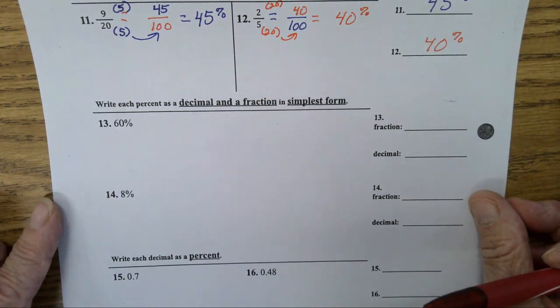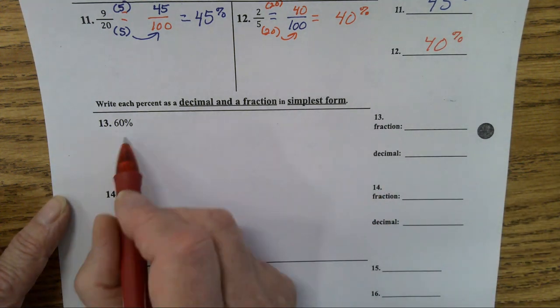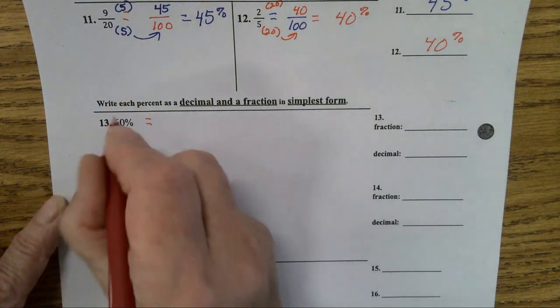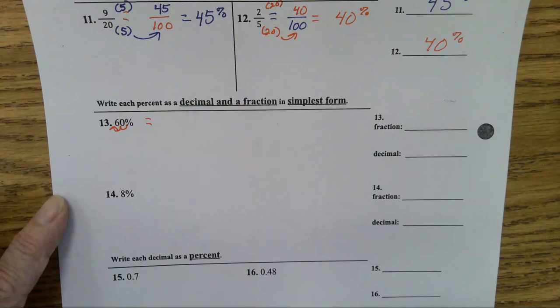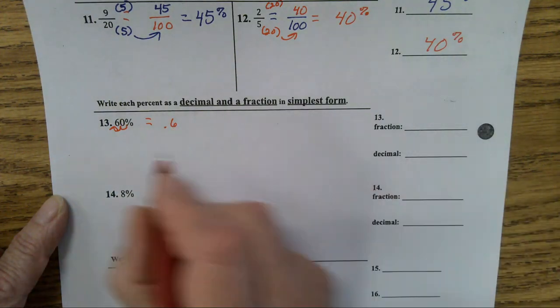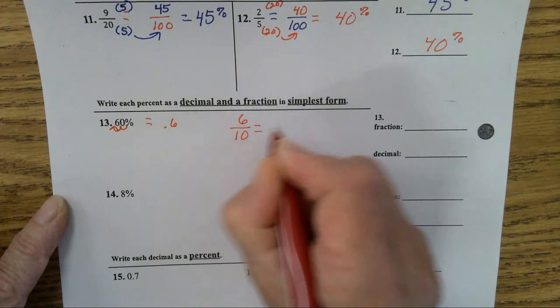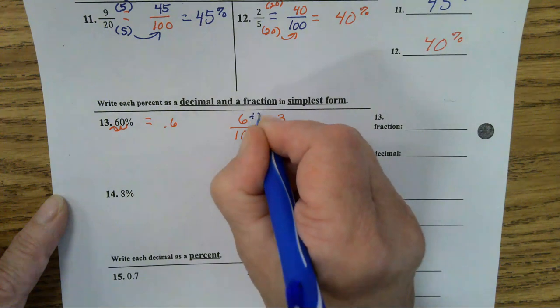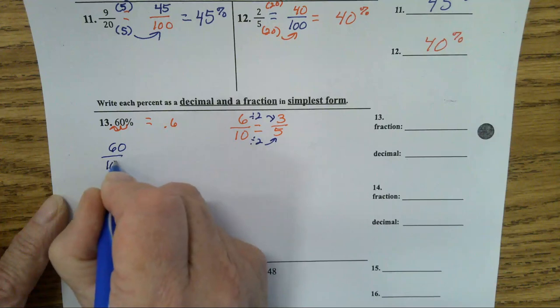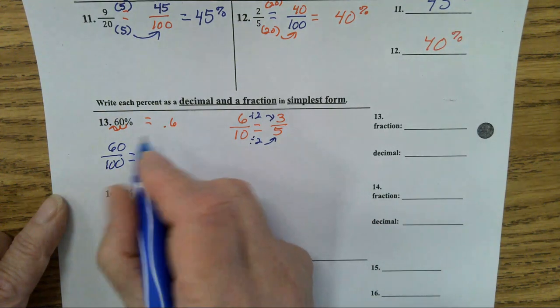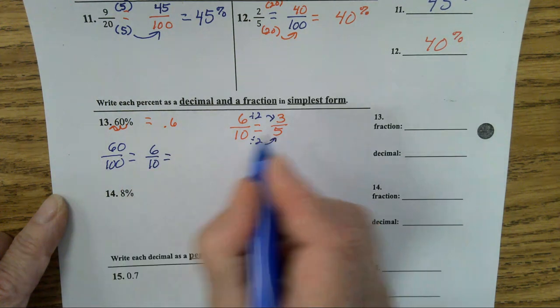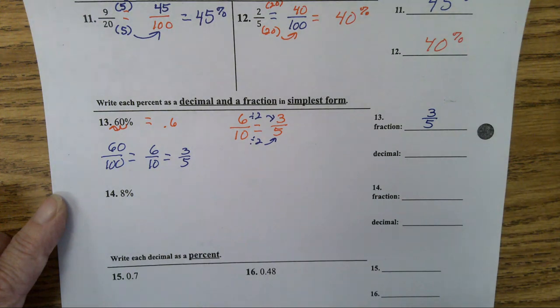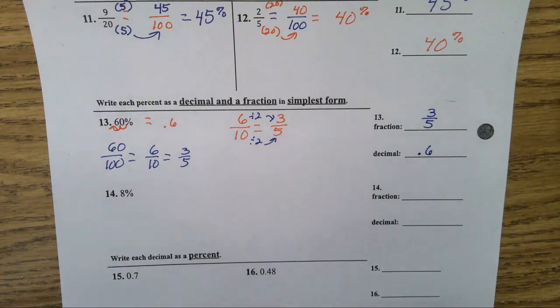Write each percent as a decimal and a fraction in simplest form. Okay. My decimal is going to be what for this? 60% is what as a decimal. You move it two places. One, two. What's that going to be? 6 tenths. Point six. Or point six zero. That's my decimal. My fraction, 6 tenths equals 3/5 because ten can be divided by two and six divided by two. Now, if you would have put 60 over a hundred, you could still get 3/5. You could divide them both by ten, six over ten, and then divide them by two and you get 3/5. So, my fraction simplified is 3/5 and my decimal, 0.6. Any questions on that one?